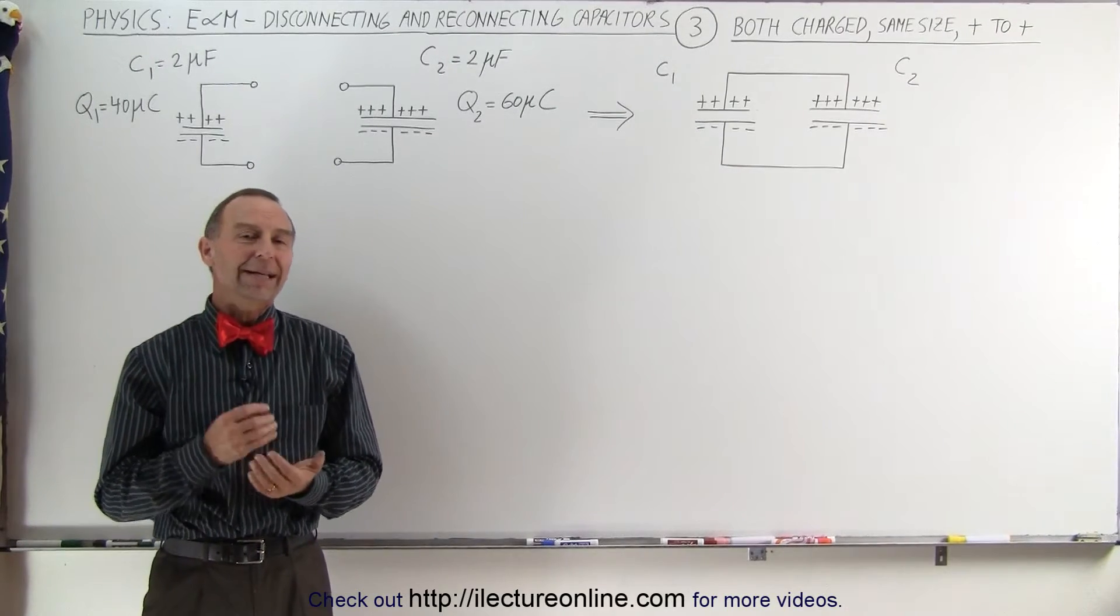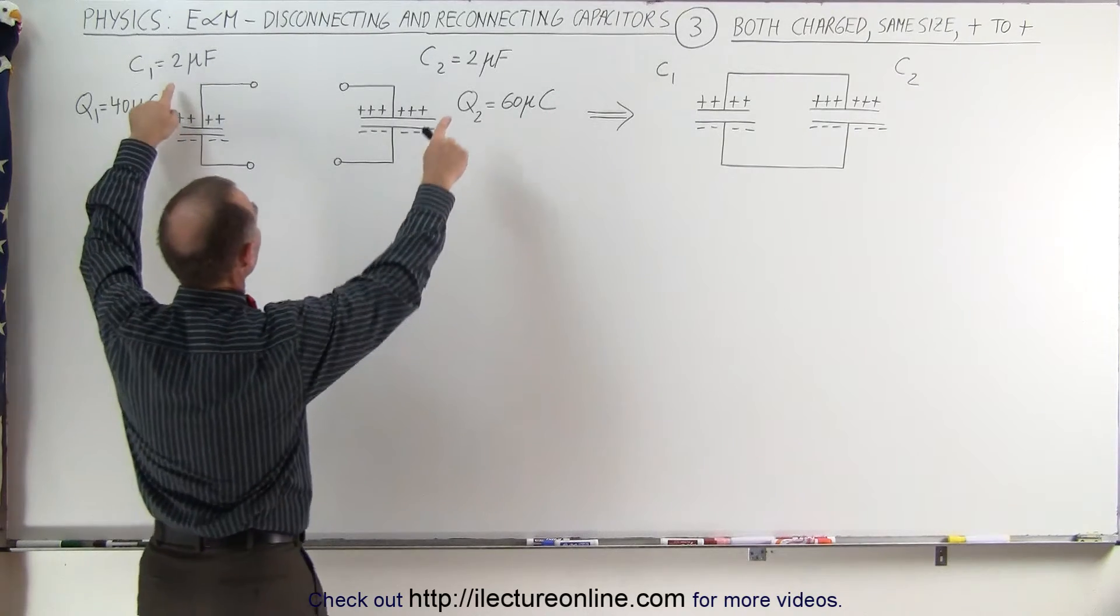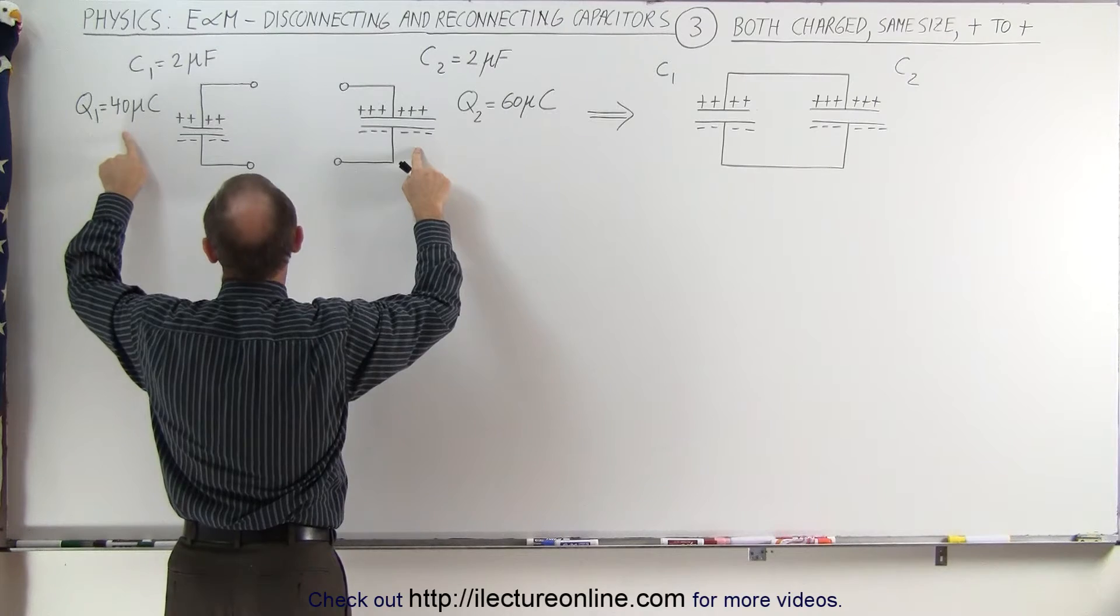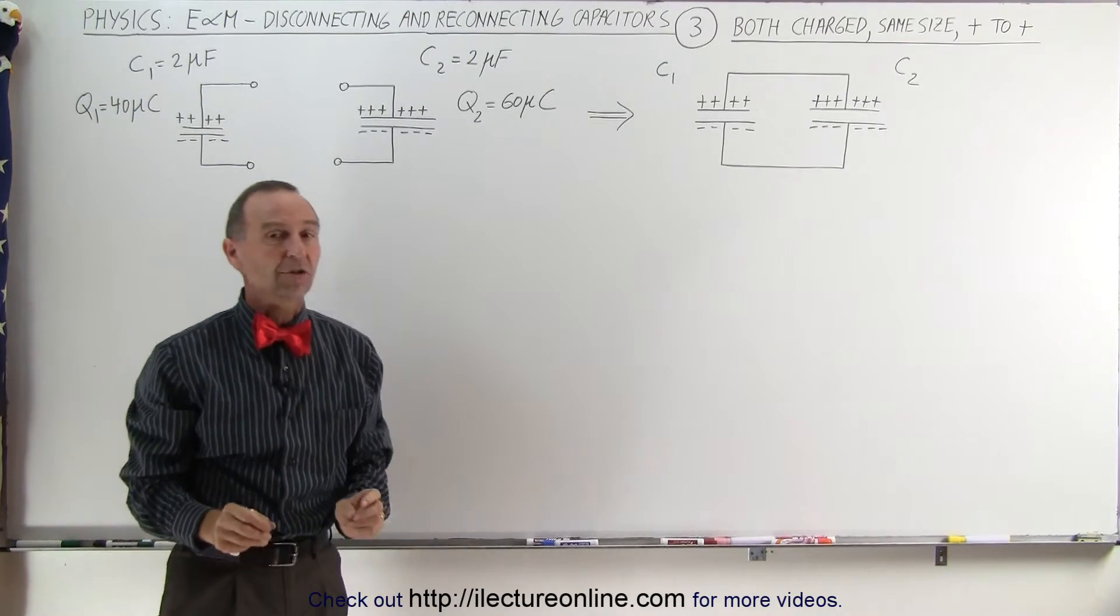Welcome to ElectronLine. Our next example involves two light capacitors. They're both two microfarad capacitors. They both contain charge. One contains 40 microcoulombs, the other one contains 60 microcoulombs of charge.